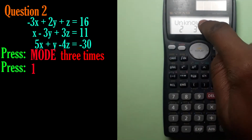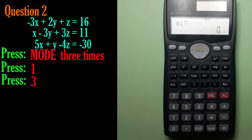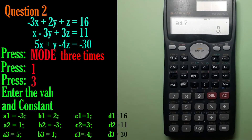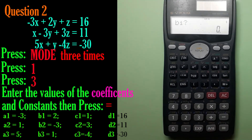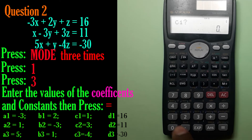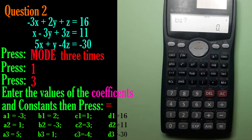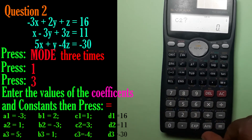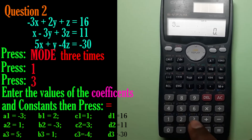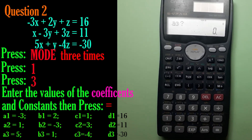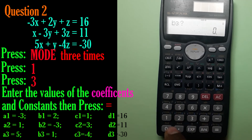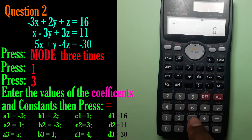Select equations — press number one — then the number of unknowns is three. Enter a1 = -3, b1 = 2, c1 = 1, d1 = 16. Then a2 = 1, b2 = -3, c2 = 3, d2 = 11. Then a3 = 5, b3 = 1, c3 = -4, d3 = -30.